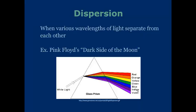Dispersion. This is when various wavelengths of light separate from each other. If you've seen the cover of Pink Floyd's Dark Side of the Moon, that's an example of dispersion, and it's listed below. Light is incident on a surface, and it is split into all of its respective wavelengths.